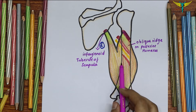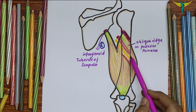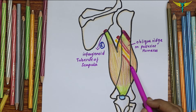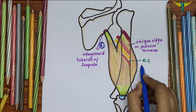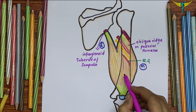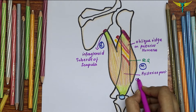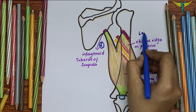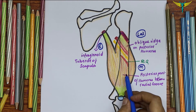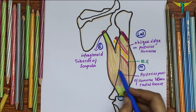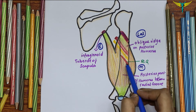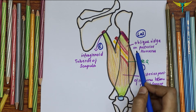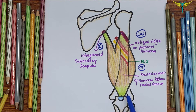The medial head originates from the posterior surface of the humerus, below the radial groove. This is the radial groove, and the medial head is named as such because it lies medial to the lateral head of the triceps brachii at the level of the radial groove.